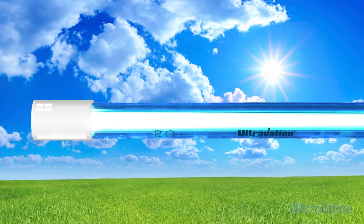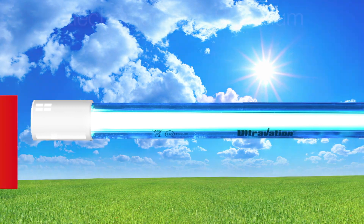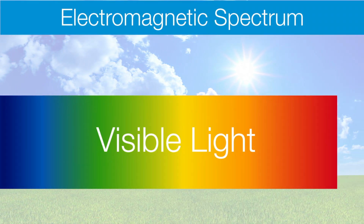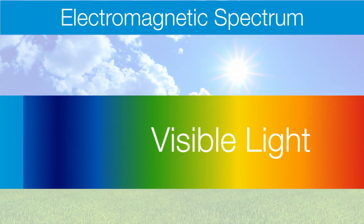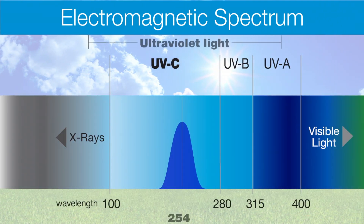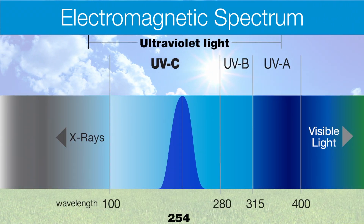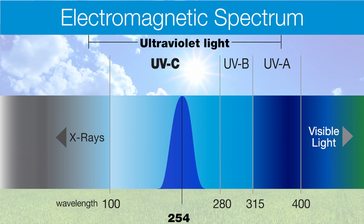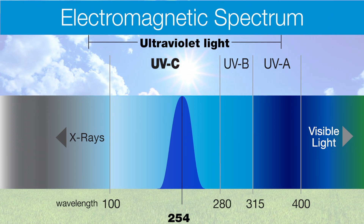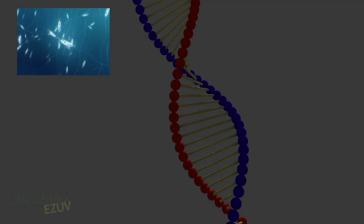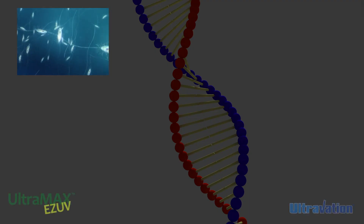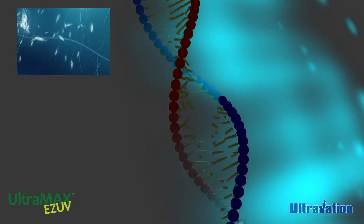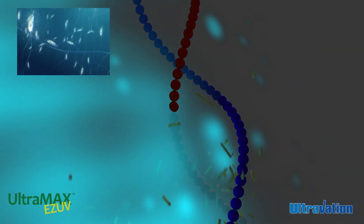UV light is a natural disinfectant and a component of sunlight. Scientifically, UV is a part of the electromagnetic light spectrum, falling just below the visible light frequencies, and the germicidal wavelength of UV light centers on 254 nm. UV light works as a disinfectant because it is able to penetrate cell tissue and break up cellular DNA.